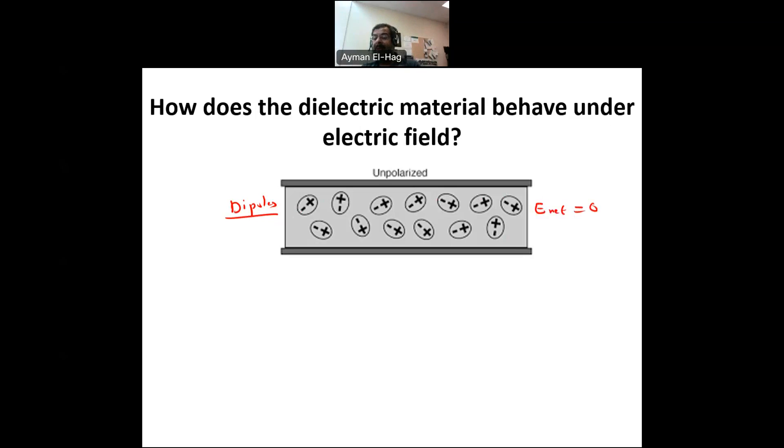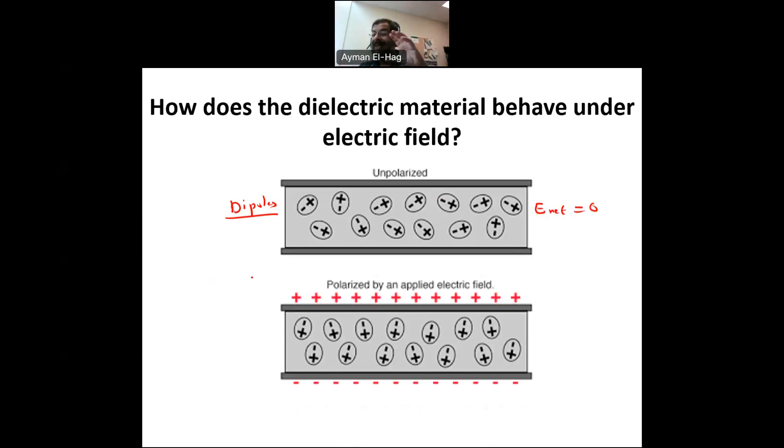Now, let's see what will happen when I apply, basically, an external electric field or a voltage. Now, we apply a DC voltage here, so this is positive, and this is negative. Now, you will start to see now those dipoles, for example, look here and look there, they start to orient themselves. Why? Because we have now an external electric field applied. This is E external.